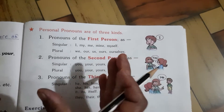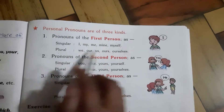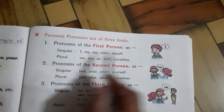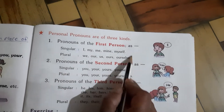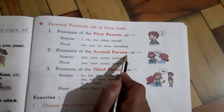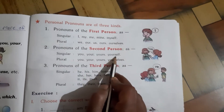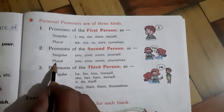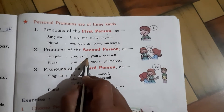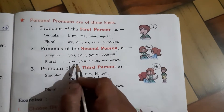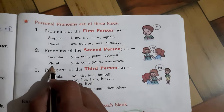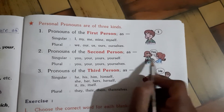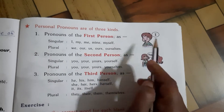For the second person — the listener — in singular form: you, your, yours, yourself. And in plural form: you, your, yours, yourselves. Note that the spelling is the same but the meaning differs: singular 'you' means 'tu' and plural 'you' means 'aap' or 'tum.' These pronouns are used for the listener.